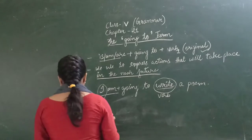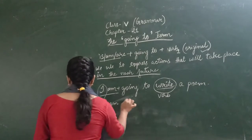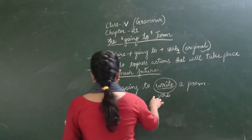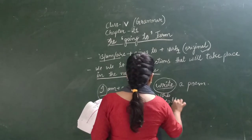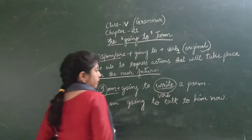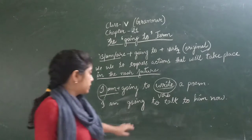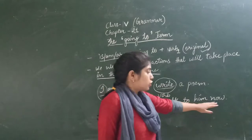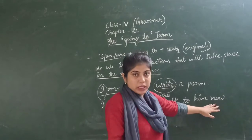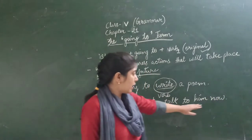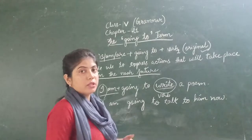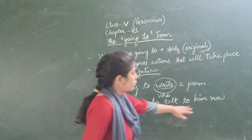The next example is: I am going to talk to him now. Notice that in the future tense we use words like tomorrow, the upcoming Monday, or next week. But here we have used now — the event is going to happen just now, immediately. So: I am going to talk to him now.